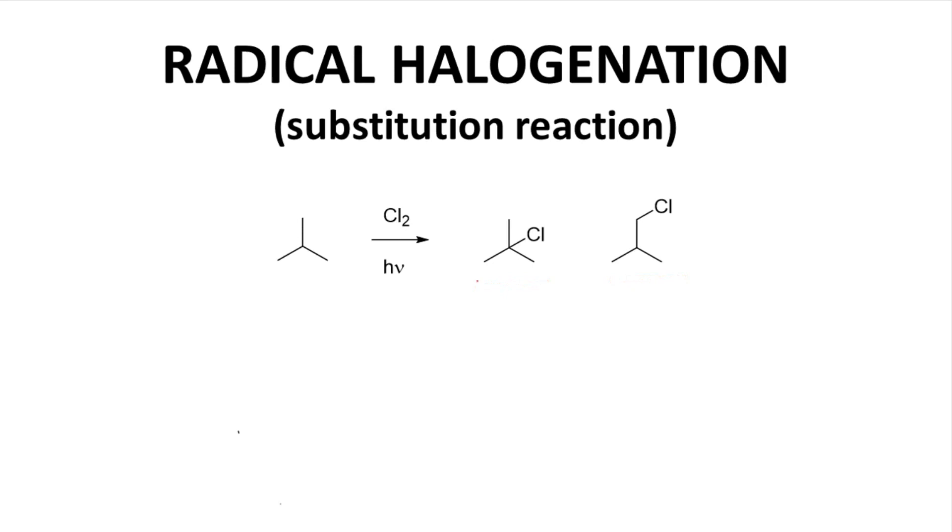One isomer, the left one, arises from removal of the hydrogen in the center of the molecule. The other isomer, the right one, arises from removal of any of the methyl hydrogens. The major product from this reaction is the left isomer. So this reaction, as drawn, is selective for the left regioisomer.